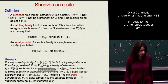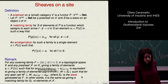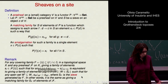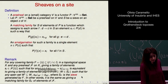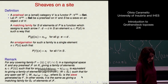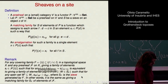Let's give the formal definition of a sheaf on a site. First, as in the topological setting, we define what a presheaf is: a presheaf on a small category is simply a contravariant functor from the category to the category of sets. Then we define what a compatible family of elements of a presheaf is — a matching family of elements of a presheaf indexed by the arrows of a covering sieve — by requiring that we have an element x_f indexed by any arrow f in the sieve, satisfying a compatibility condition.